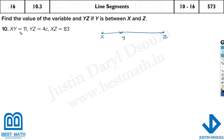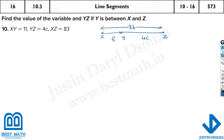They've given us the dimensions: XY is 11, YZ is 4 times C, and XZ is 83. This 83 is the total XZ — the diagram is not to scale, but the point is that Y is in between the two points, so the two segments when added up will give the total length.